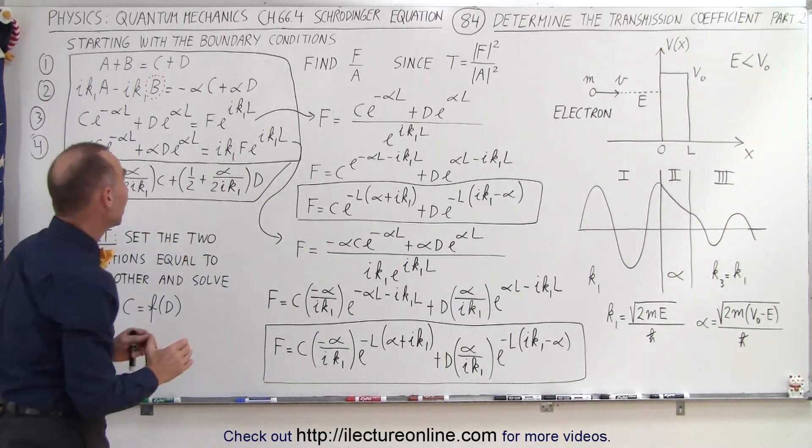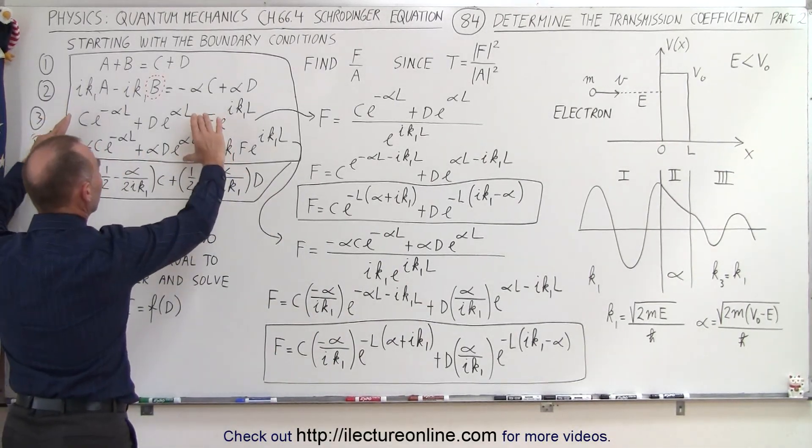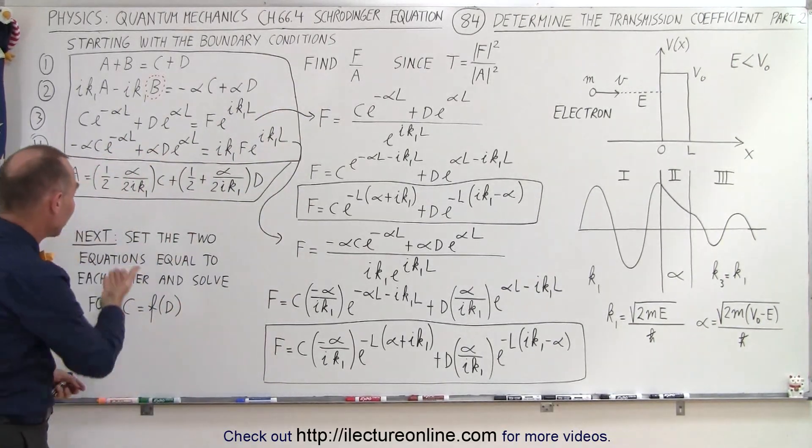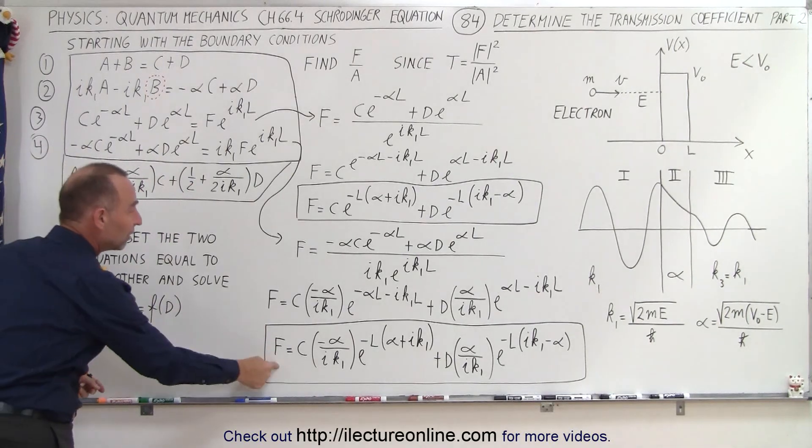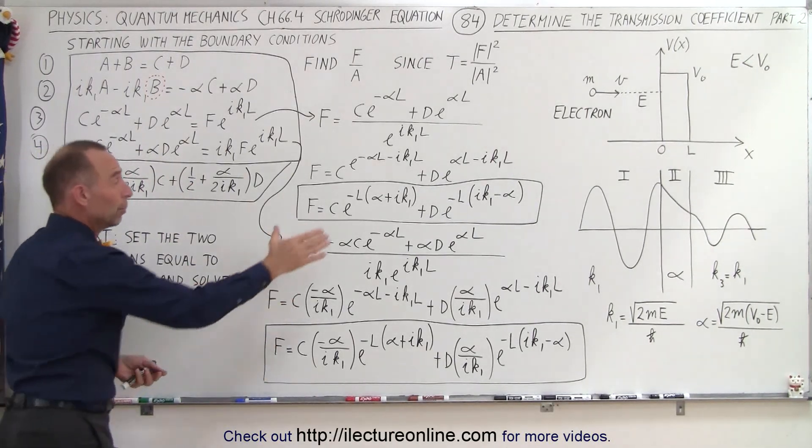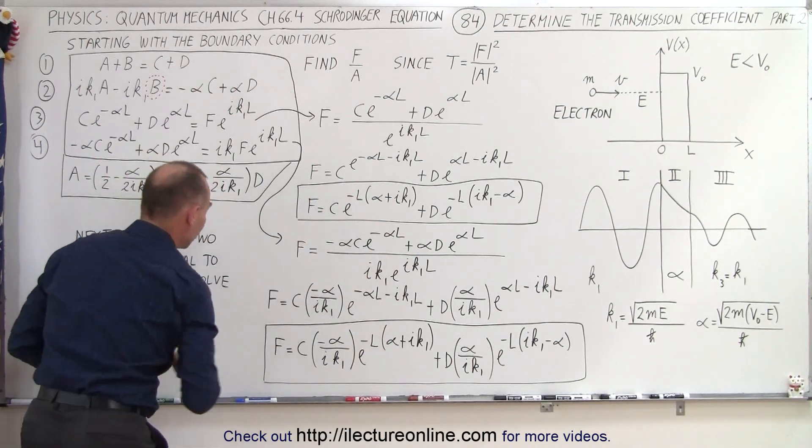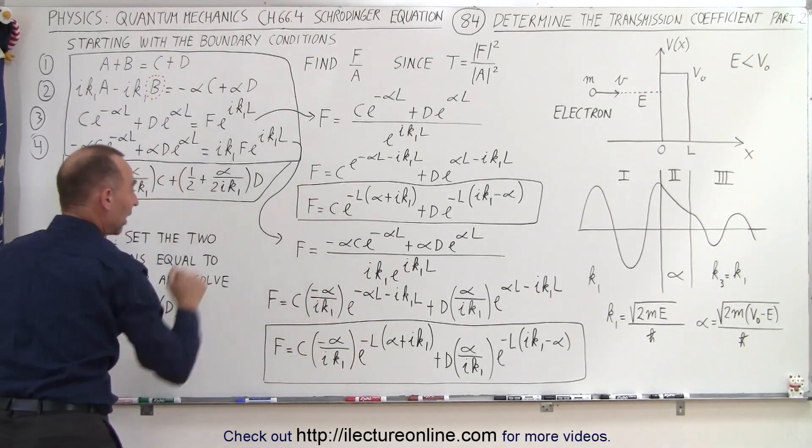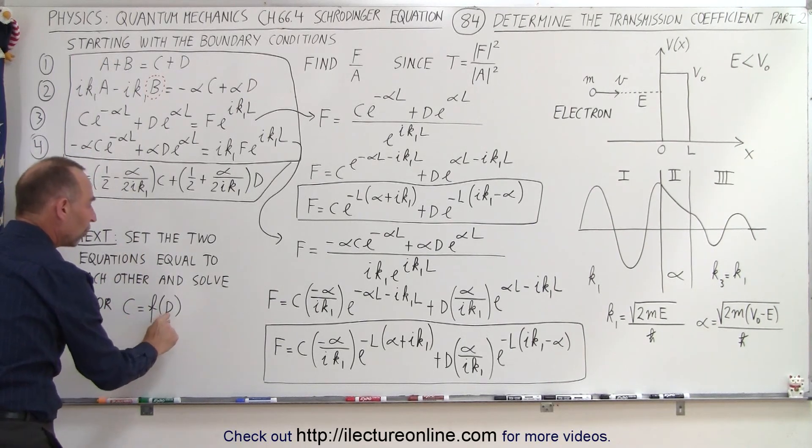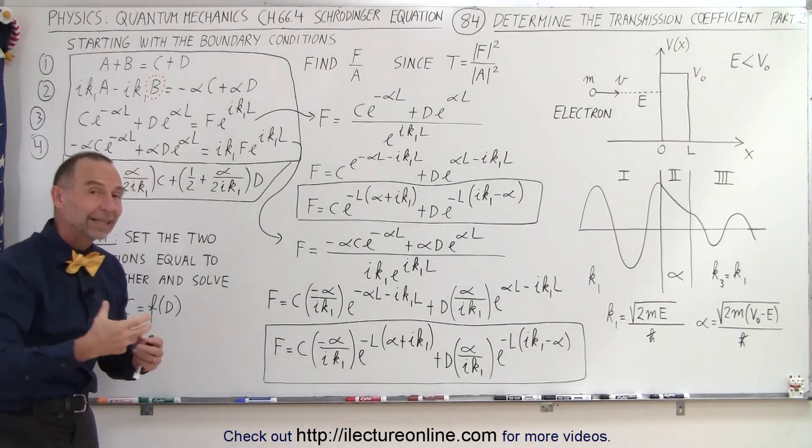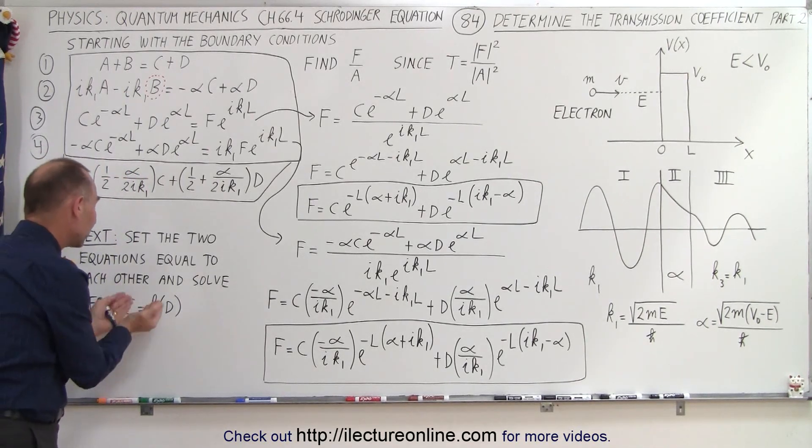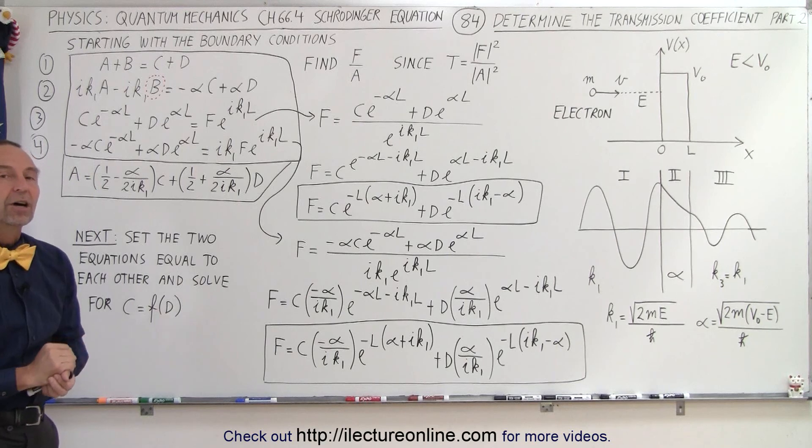So what we now have is we took equation 3 and 4, we solve both equations for f, and the next step, what we have illustrated here, we're going to take these two equations, set them equal to each other. After all, both of these equations are equal to f, the right side in each case is equal to f, so we'll set it equal to each other, and then solve for C in terms of D. And if we do that, we can then eliminate the constant C by replacing every C by its equivalent function of the constant D.